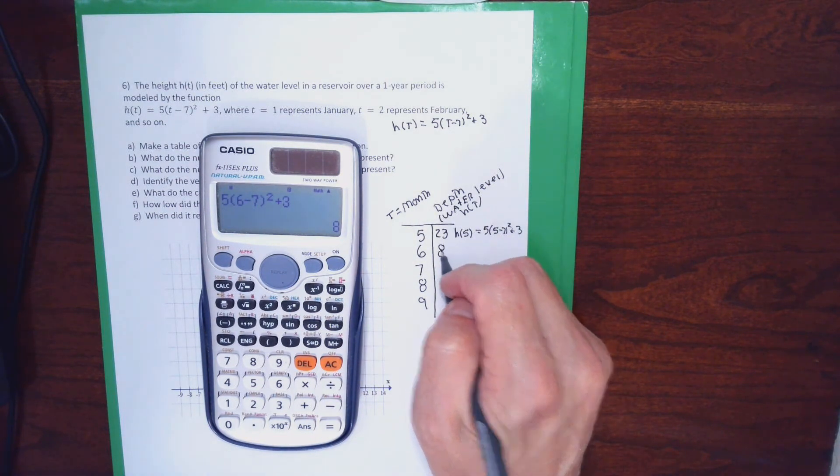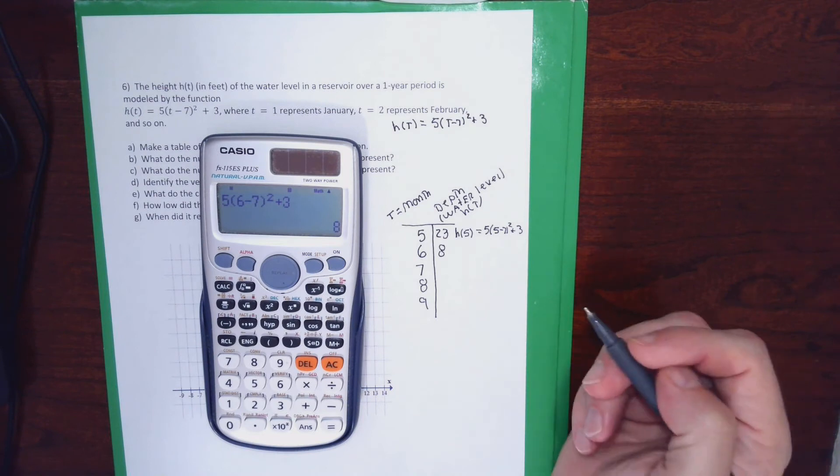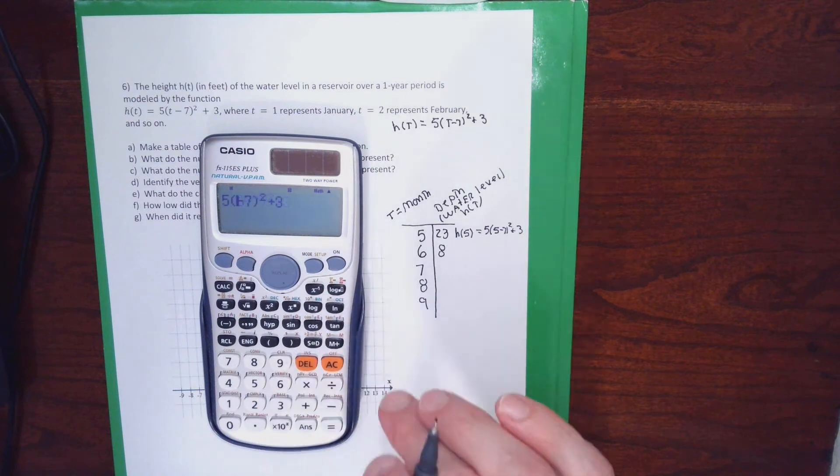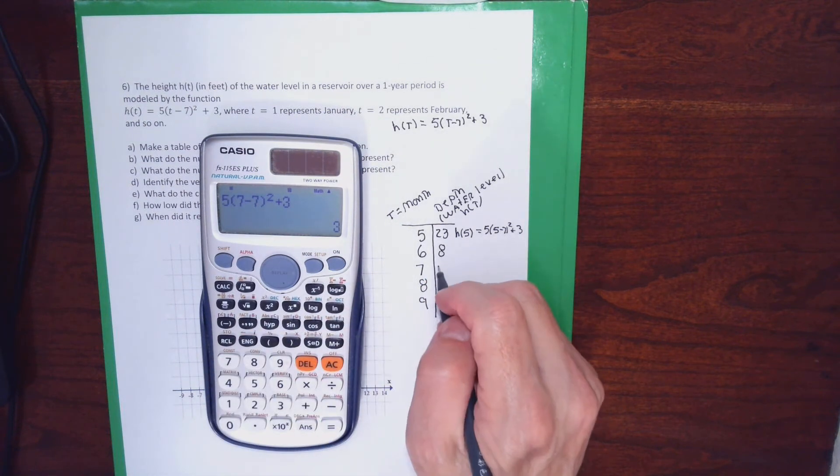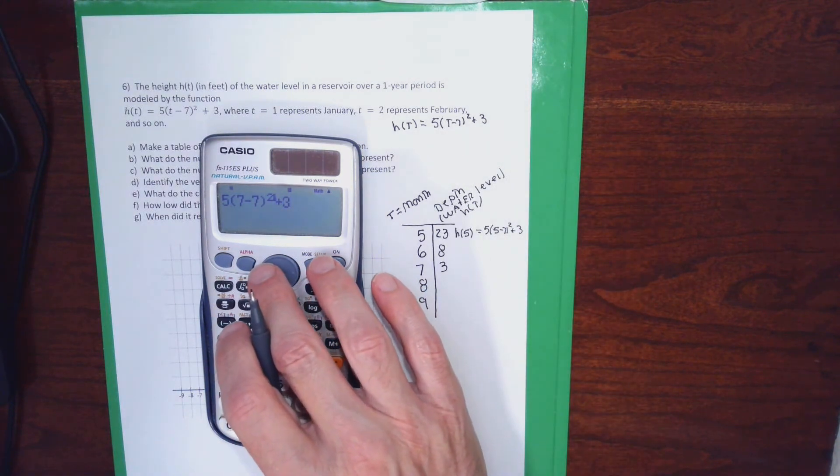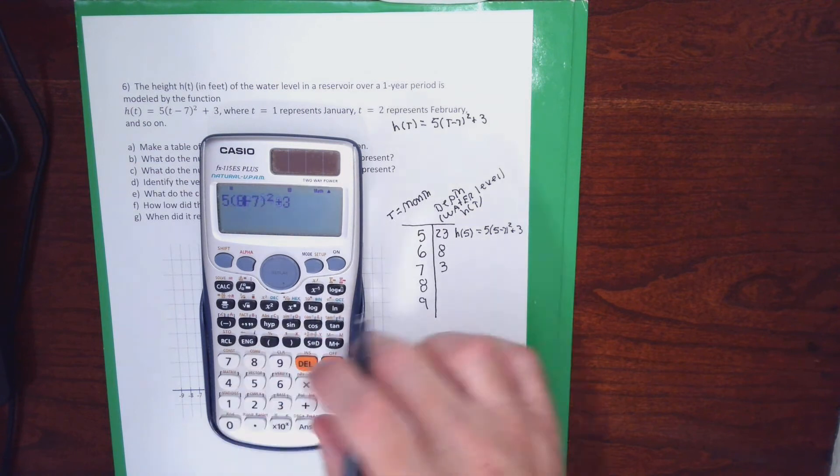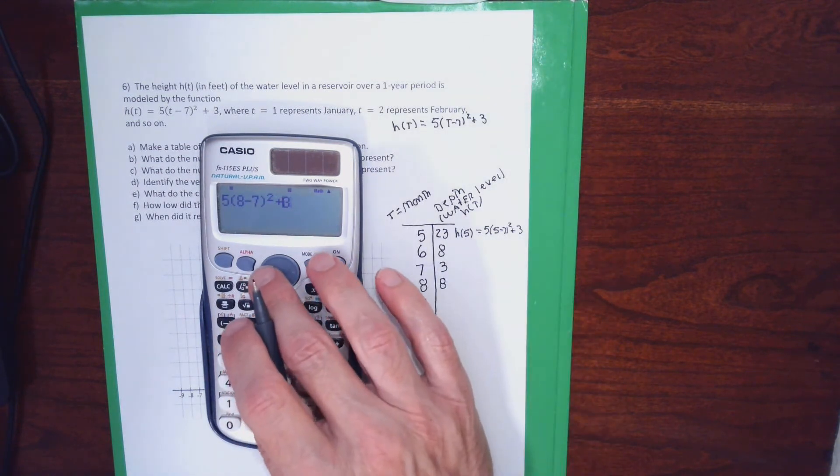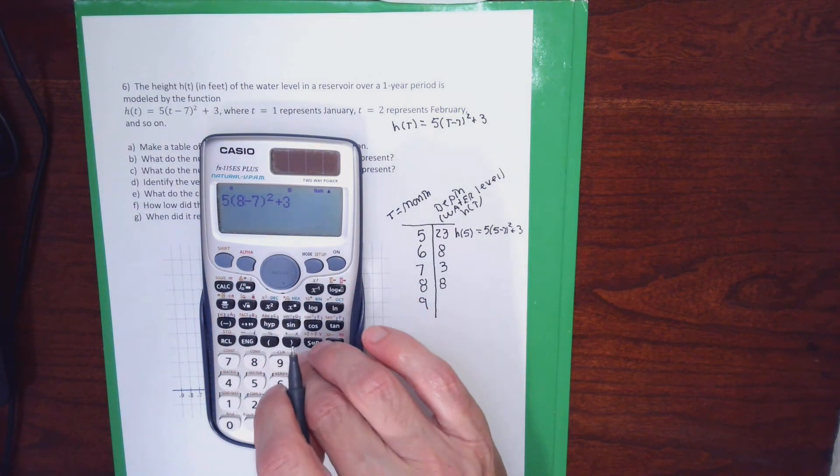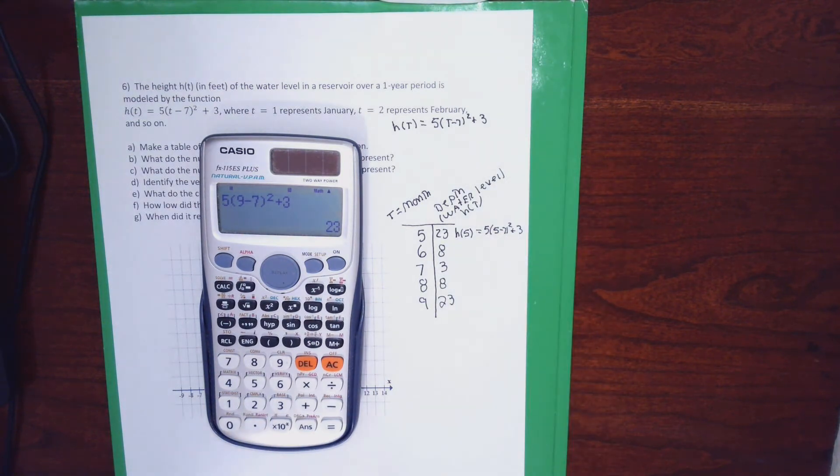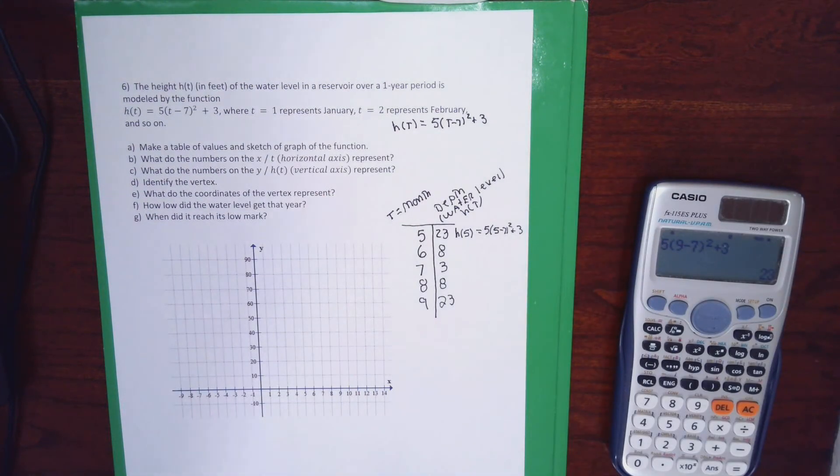So when I plugged in 6, it would say in June, it went down to 8 feet. Maybe it's holding snow runoff, and it's just evaporating like a lot of the reservoirs do. And in 7, I get all the way down to 3 feet. It's almost drained, which is in July. And again, this is not probably a very realistic problem. I'm just making up something that I could have you interpret the values. But it's not really that realistic. So that is the table of values.